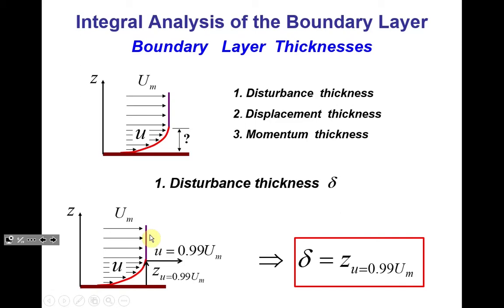Why 99% and not exactly 100%? Because the transition from boundary layer velocity to external velocity is asymptotic — it changes very, very slowly and is essentially impossible to measure precisely. Engineers agreed on 99%; they could have chosen 98% or 97%, but 99% became the accepted standard.